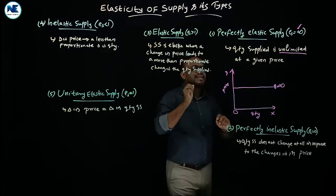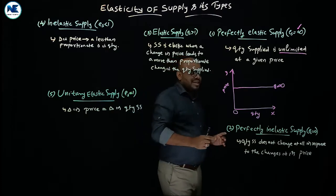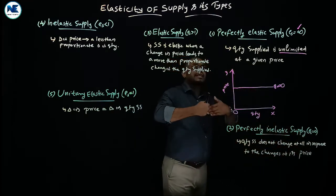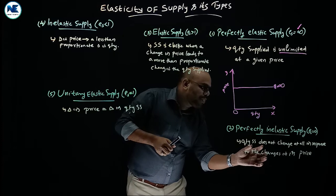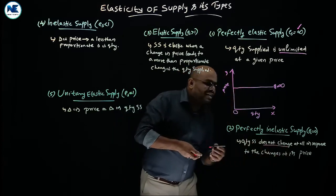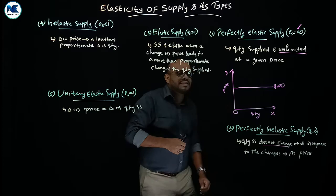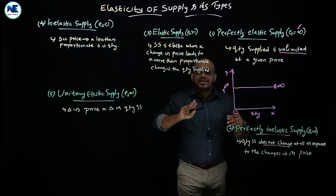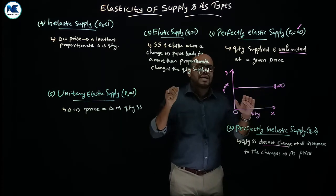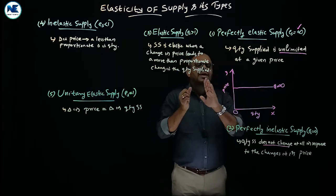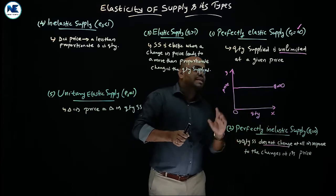The second type is perfectly inelastic supply, where the value is zero — just the opposite of perfectly elastic supply. Here, quantity supplied does not change at all in response to changes in price. The quantity supplied remains fixed and constant, giving a coefficient of zero.